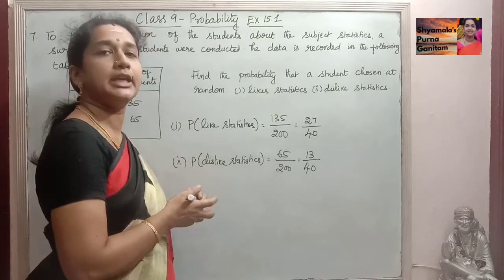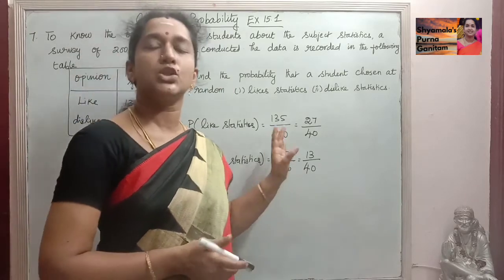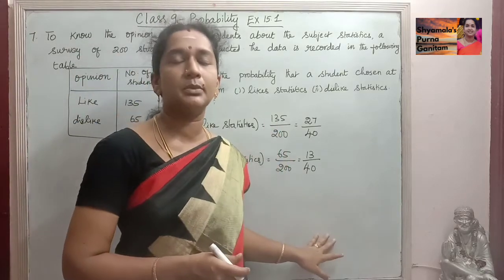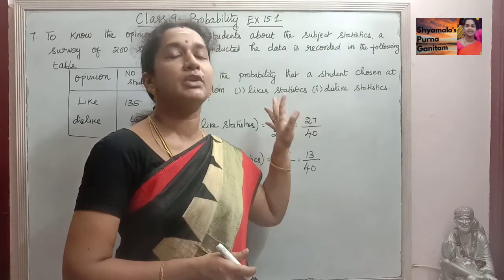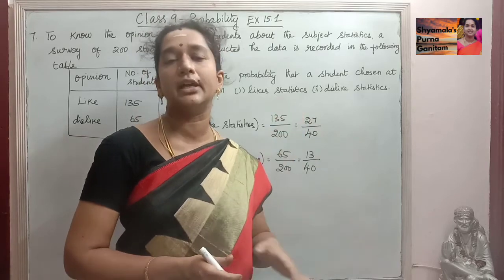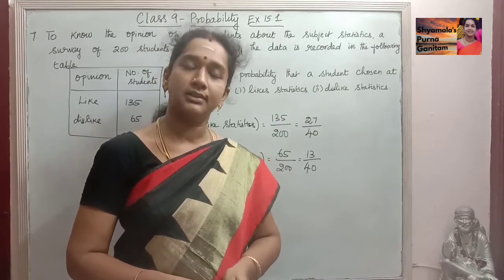So 13 by 40 is the simplified form of 65 by 200. With the given data we find the probability accordingly. Ok. Thank you.